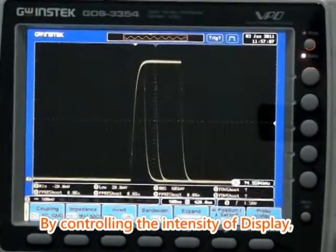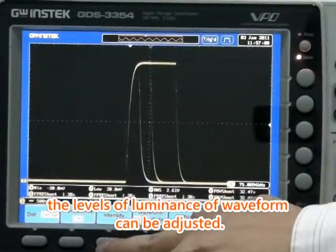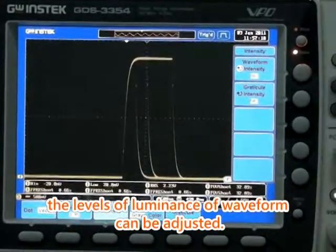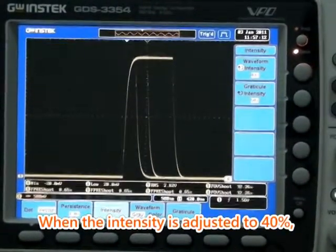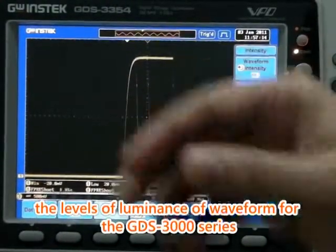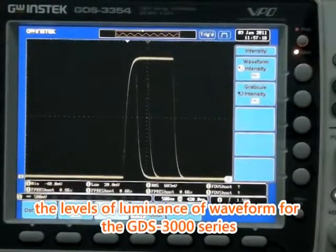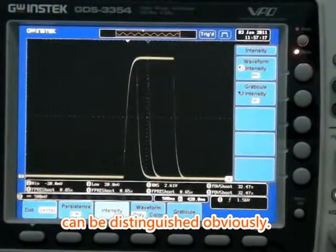By controlling the intensity of display, the levels of luminance of waveform can be adjusted. When the intensity is adjusted to 40%, the levels of luminance of waveform for the GDS-3000 series can be distinguished obviously.